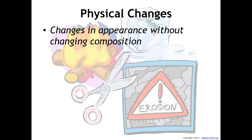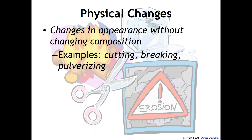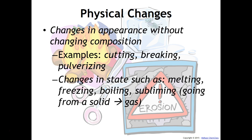Physical changes are changes in appearance without changing the composition. For example, cutting something, breaking something, or pulverizing — which just means breaking apart into really small pieces. Changes in state such as melting, freezing, boiling, and subliming (sometimes called sublimation) are also physical changes. For instance, solid carbon dioxide will sublime — going directly from a solid to a gas. Any change of state is a physical change because it's still the same substance.